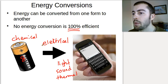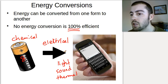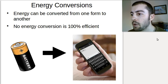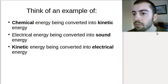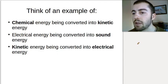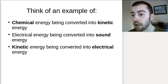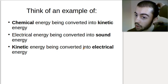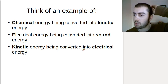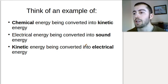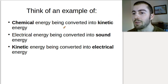This is what we want to be able to track — different types of energy and how they are converted and transformed in various processes. Pause the video and try to think of an example of: chemical energy being converted into kinetic energy, electrical energy being converted into sound energy, and kinetic energy being converted into electrical energy.